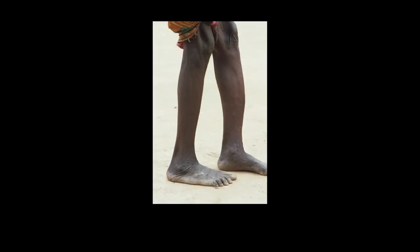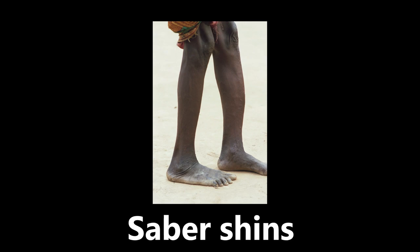This next picture — it might be a little bit hard to identify — but what we're looking at is an example of saber shins. Basically, there's some anterior bowing of the tibia that's really apparent on the left side here — you see how it's kind of bending forward. This is important because it is mostly seen in congenital syphilis. So if you see this bowing of the tibia, it's called saber shins, and you want to associate that with congenital syphilis.